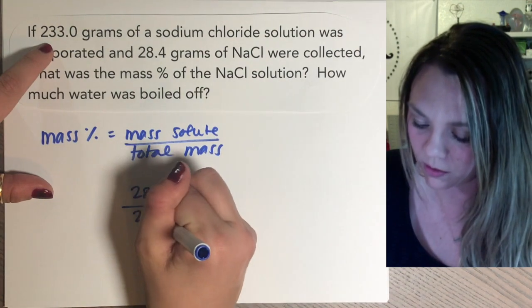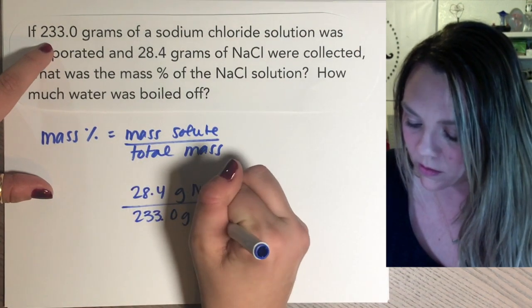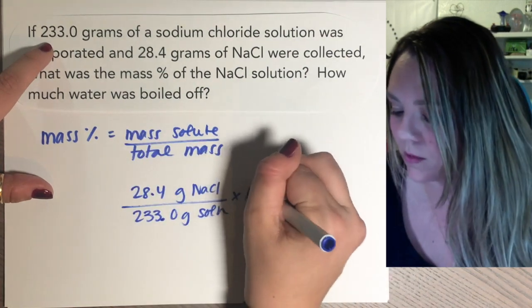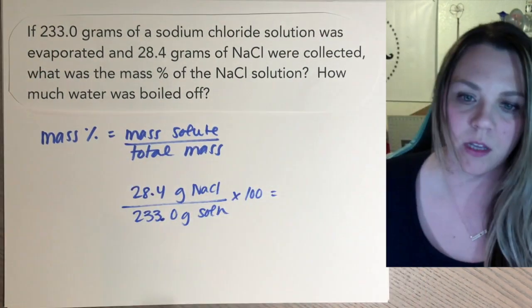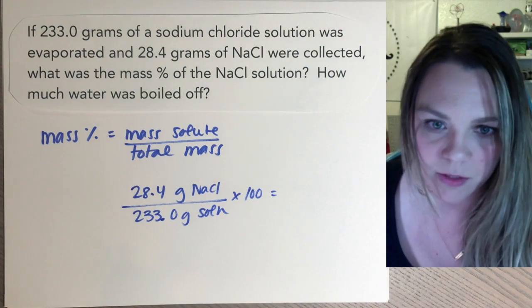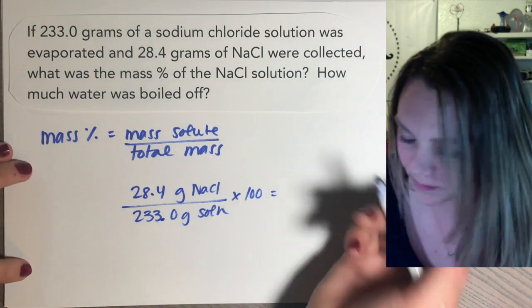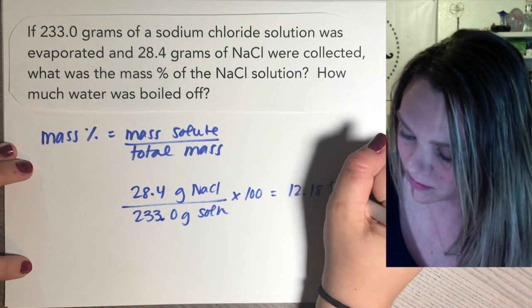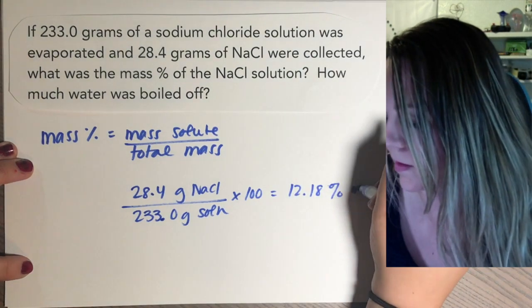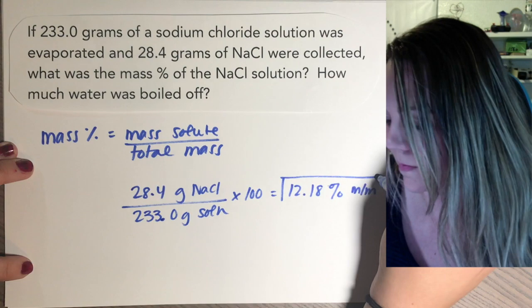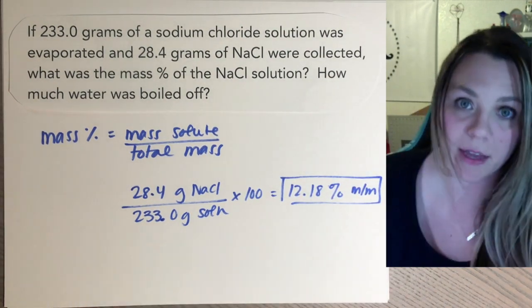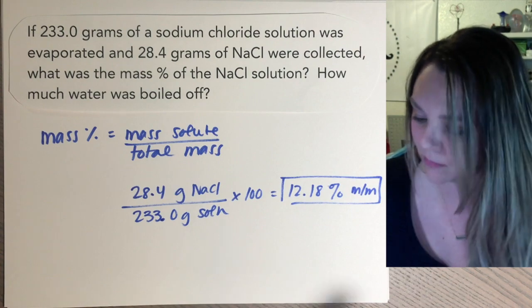So what was the total solution I had? Well, my total solution was 233 grams. Times a hundred equals a number that I've hopefully already solved for you. 12.18 percent. So it'd be 12.18 percent by mass. That's it.